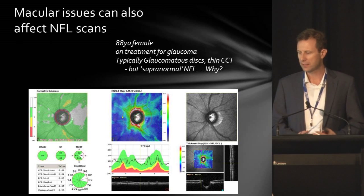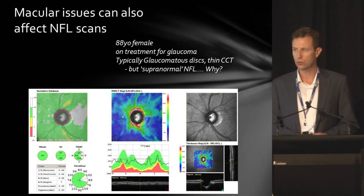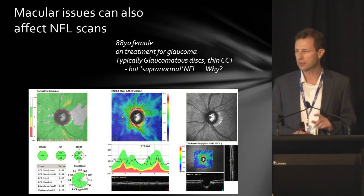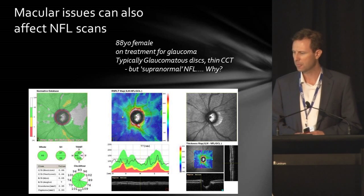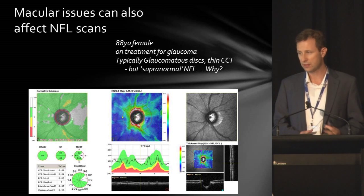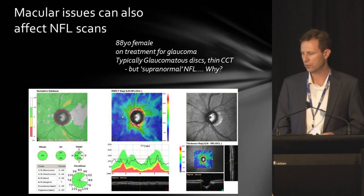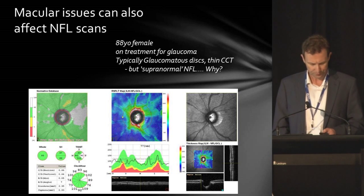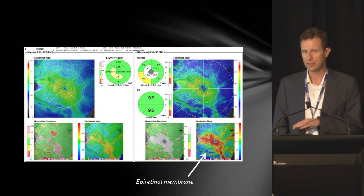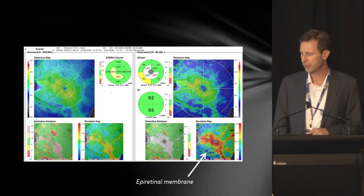A reminder that macular issues can also affect your retinal nerve fibre layer scan. This is an 88-year-old lady on treatment for glaucoma with typically glaucomatous discs, yet when you image the nerve fibre layer, it's actually in the normal range or even supranormal. The reason is an epiretinal membrane, visible on her macula scan, that's elevating the whole area.